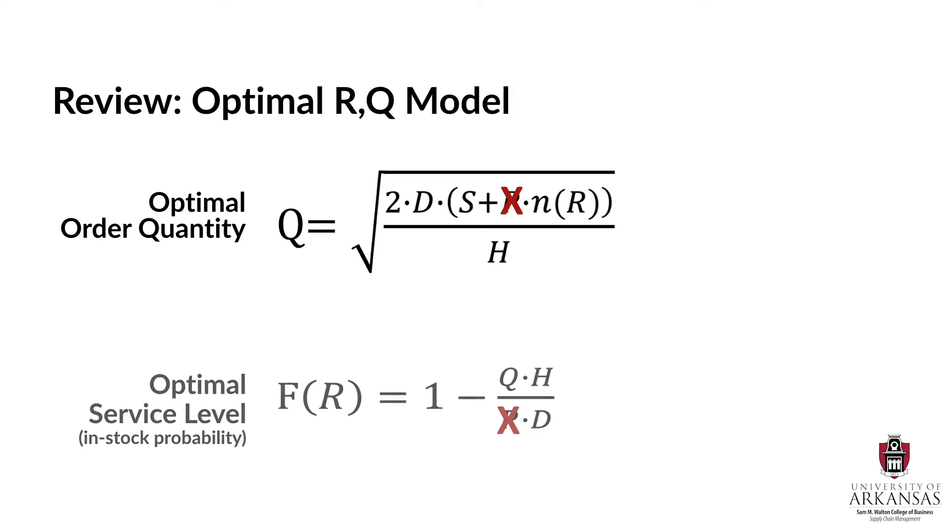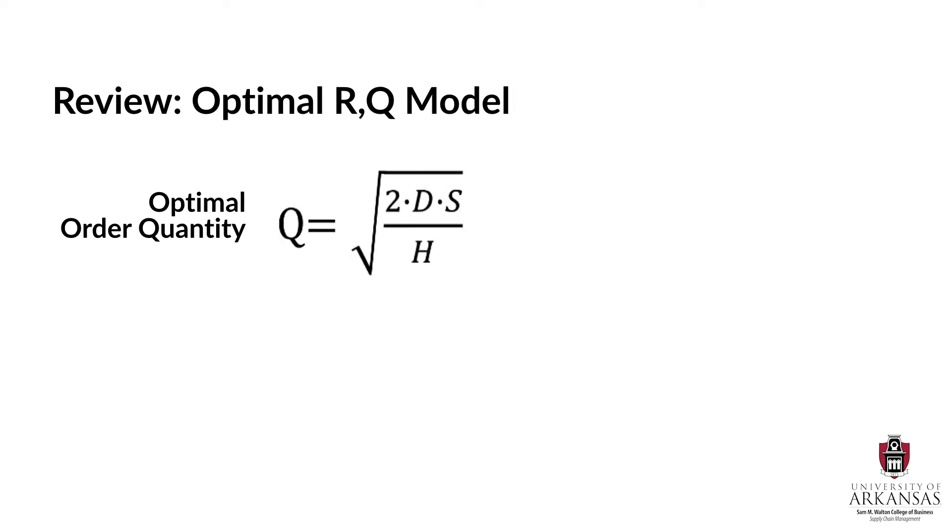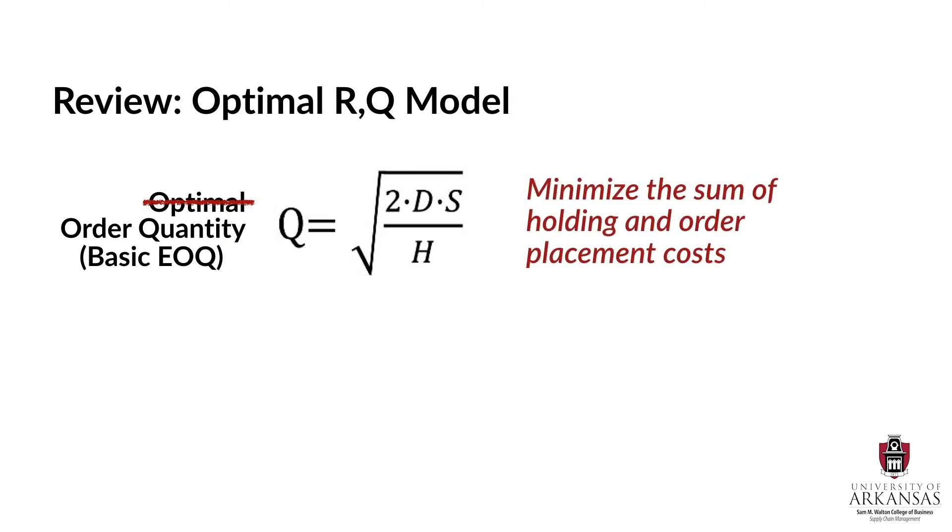Let's take a look at the order quantity first. If we don't know the backorder cost, the product of P and N cannot be calculated, and it effectively drops out of the formula. And when that happens, we are left with the basic EOQ. In other words, when we don't have backorder cost information, the best we can do is choose Q so as to minimize the sum of holding and order placement costs. And that's precisely what the basic EOQ does.